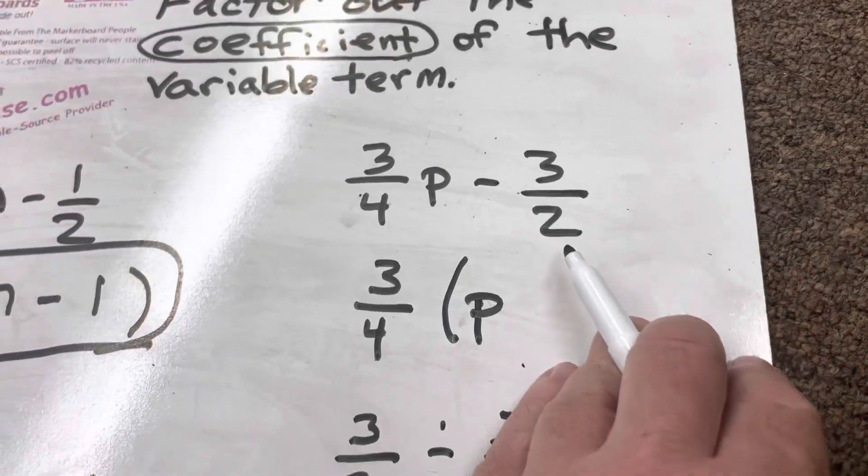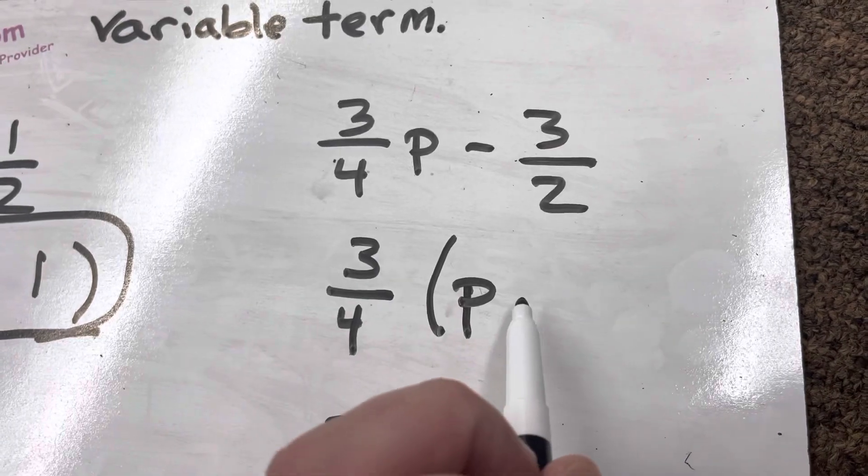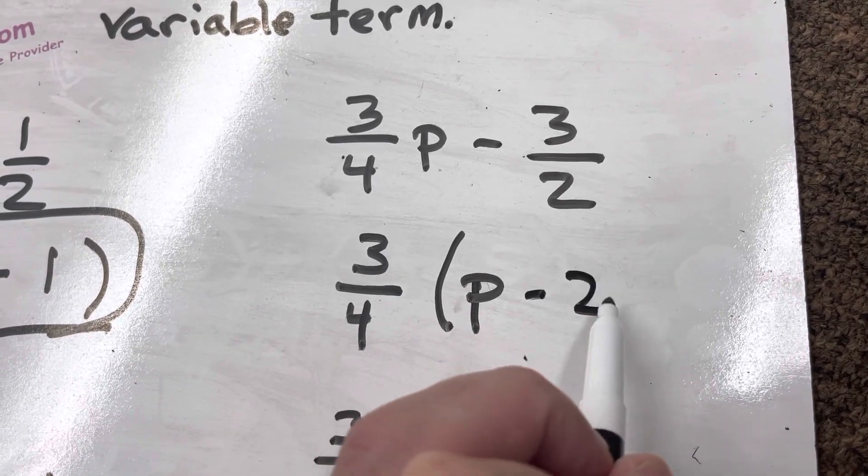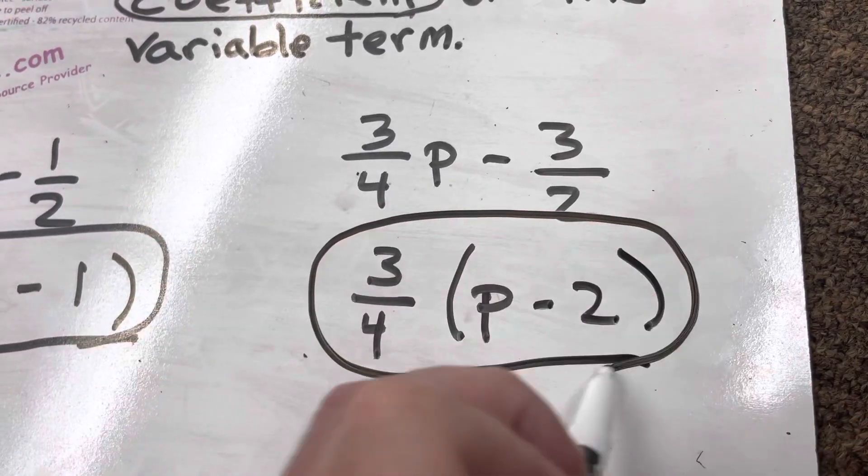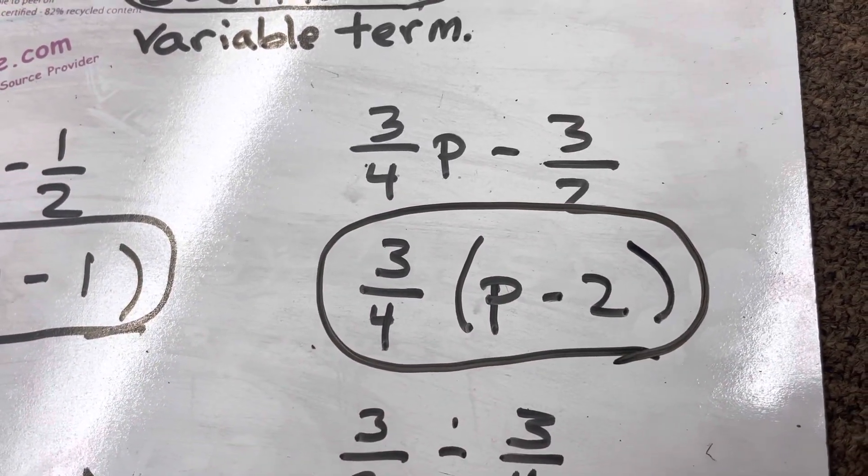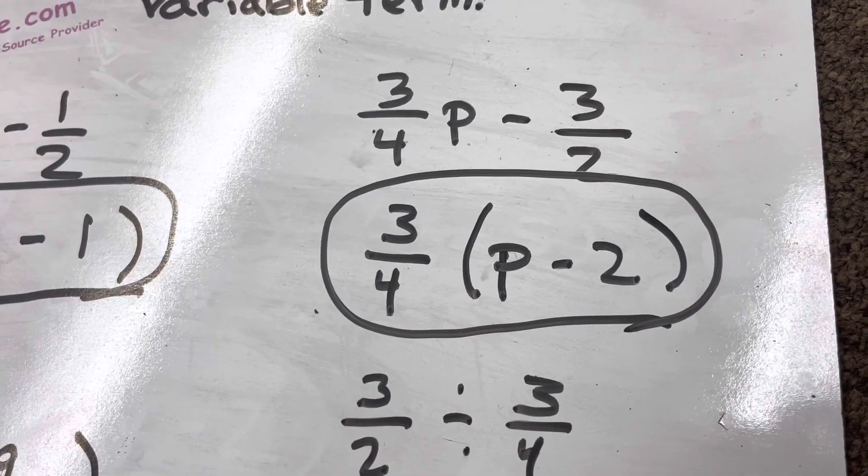Negative 3 over 2 divided by 3 fourths equals 2. But it's a negative 3 over 2, so it has to be a negative 2. And it will read as 3 fourths times P minus 2 with the P minus 2 in parentheses. All right, we'll talk to you later, 7th grade. Bye.